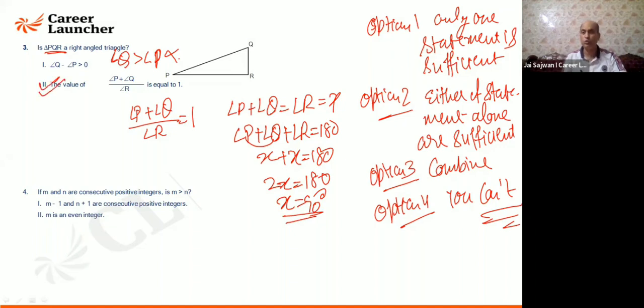I will say only statement 2 is sufficient. So your option will not be 2 and your option will be 1. Only one of the statements is sufficient to give you the answer, not the other one. Fine, let's try to do if anyone having any.